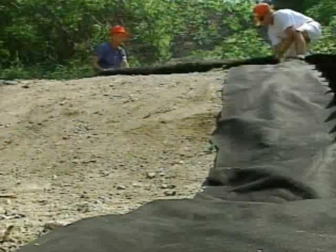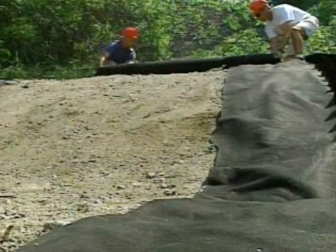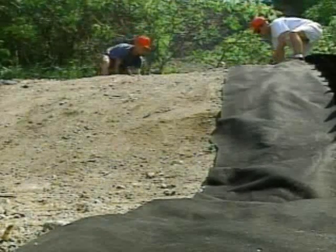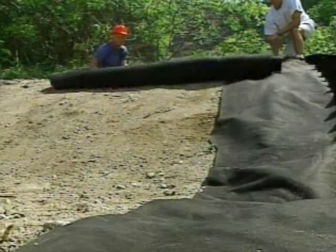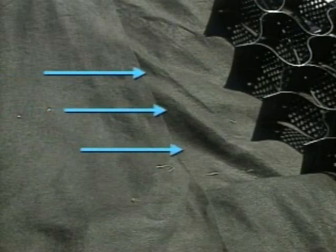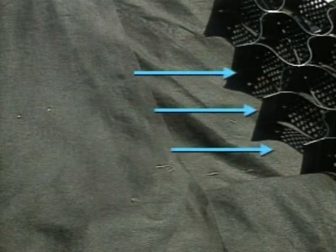On slopes and channel inverts, place the upper edges of the GeoTextile in the anchor trench at the slope crest and unroll it down the slope. In channels, overlap the GeoTextile in the direction of flow and secure it. On flat surfaces, expand the GeoWeb sections and hold them in place with temporary or permanent anchors.